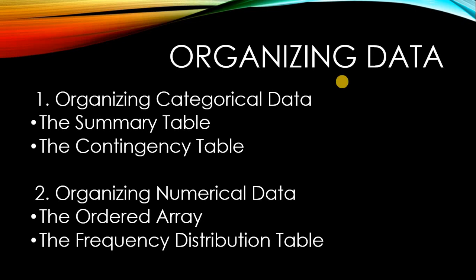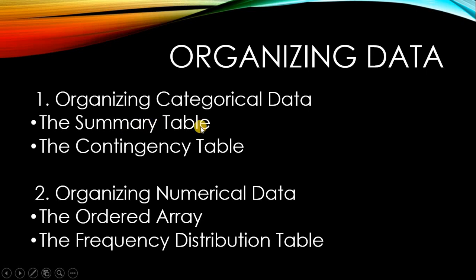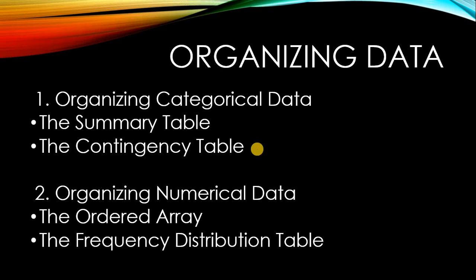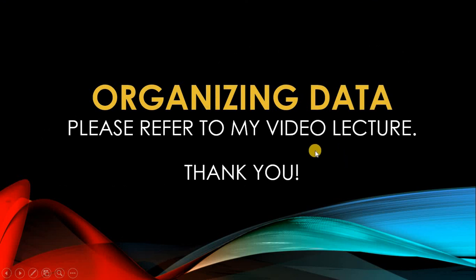Under organizing data — still under presentation of data — after you collect, you present and organize. Your data might come in different types. If it's categorical data, you have to present it in a summary table. For example, age, height, gender, and course are categorical data — you categorize them, get the tally, and present the summary. Or you can use a contingency table presenting percentages instead of numbers. If it's numerical data, you present it in either an ordered array or a frequency distribution table. That ends my introduction to statistics.